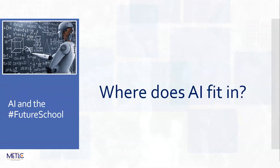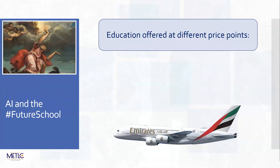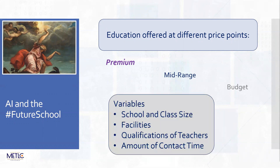Education is evolving - in some ways it already is here but we just don't recognize it - into being offered at different price points. Those of you who work in the UAE will be quite familiar with this aggregated market in terms of quality of provision, class sizes and so on. The analogy I often use is that of airlines, where we have a premium, a mid-range and the budget version of education. In a sense you're all on the same journey, but what you get along the way is quite different.